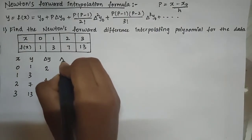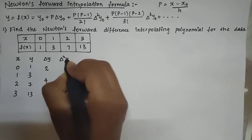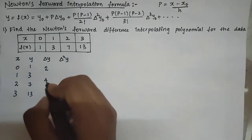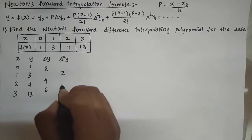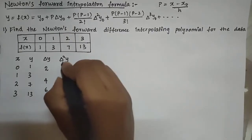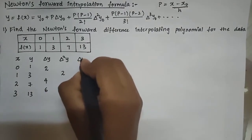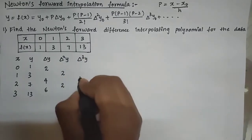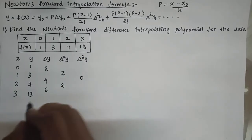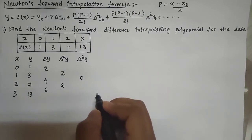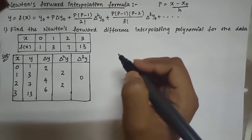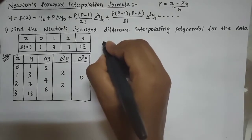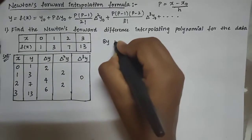Moving to the second difference Δ²y: 4−2=2 and 6−4=2. Now the third difference Δ³y: 2−2=0. This completes the forward difference table.